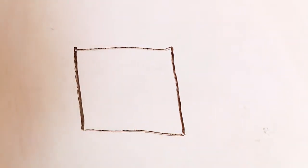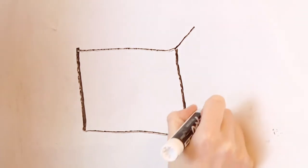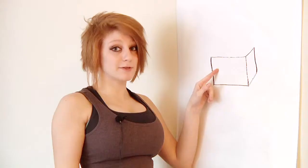Now to make it look three-dimensional, we're going to draw two diagonal lines coming off of it. And you're going to connect these. So you're going to have a shape that looks like this.